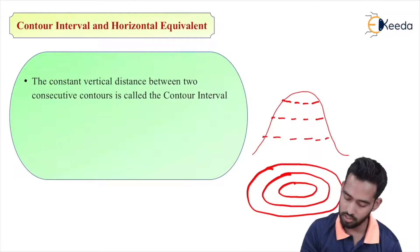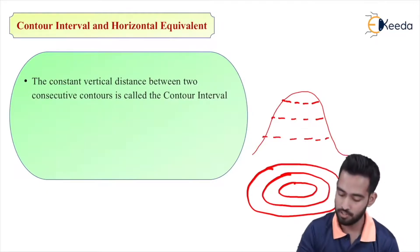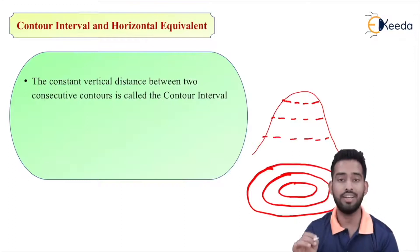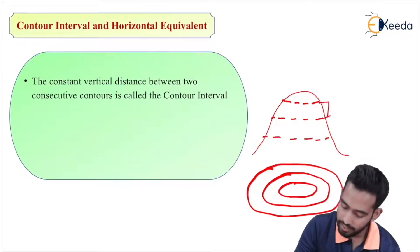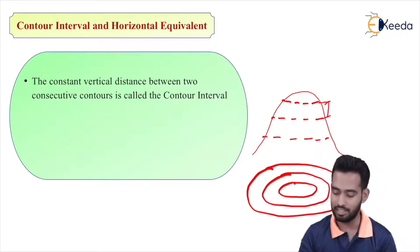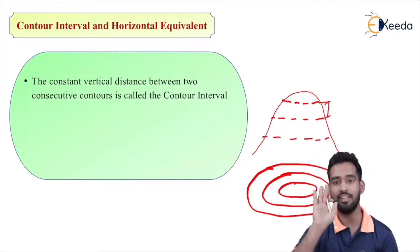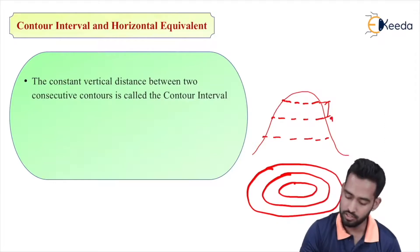So this is the actual contour which I have drawn of a mountain section. Now what is contour interval? It is the vertical distance between two consecutive contours, known as contour interval. So it is nothing but a vertical distance where we can get in top view elevation, so these distances are known as contour interval.